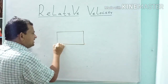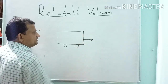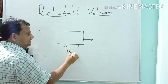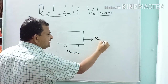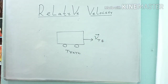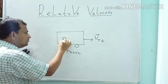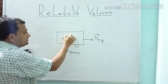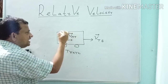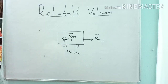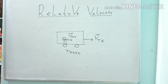Suppose here is a vehicle — a train — its velocity is VTE, velocity of a train with respect to earth. Suppose a person is here, and his velocity is VMT — a person is walking in the train with velocity VMT. VMT means velocity of the person with respect to the train, because he is moving on the train. VTE means train is moving on the earth — train with respect to earth.